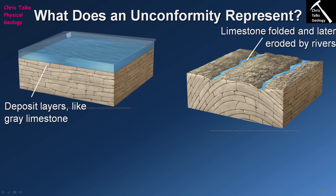Eventually our limestone is going to be pushed above sea level, and this can happen in one of two ways: either global sea levels drop, exposing the limestone, or the limestone itself is pushed physically above sea level due to deformation. In the diagram here, the limestone beds which were once horizontal are now quite clearly folded, so we know this limestone has been pushed up above sea level due to deformation. Once above sea level, it is exposed to erosion from the atmosphere or processes such as rivers, producing a very uneven, highly irregular surface.